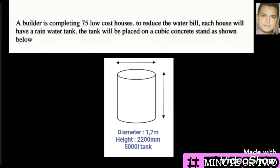This question is taken from the 2020 Department of Education booklet. A builder is completing 75 low-cost houses; to reduce the water bill, each house will have a rainwater tank. The tank will be placed on a cubic concrete stand as shown below. The water tank has a diameter of 1.7 meters and a height of 2200 millimeters. Furthermore, this is a 5000-liter tank placed on a cubic concrete stand.